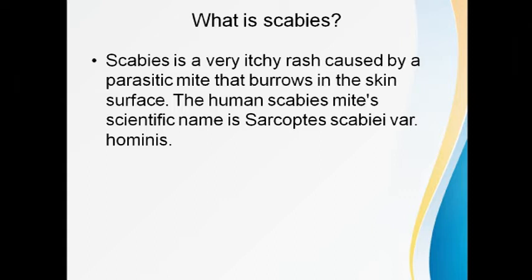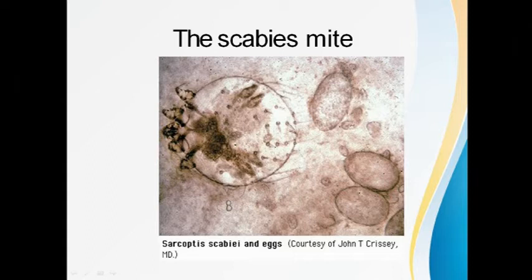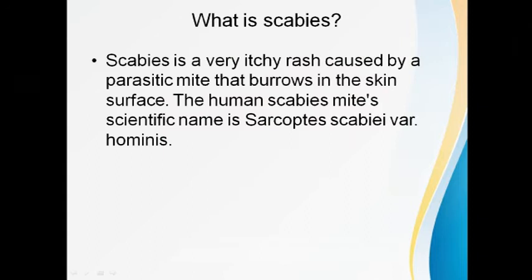The itch mite burrows through the skin. The scientific name for the scabies mite in humans is Sarcoptes scabiei var. hominis. Other variants of scabies also exist — animal scabies is a common condition caused by animal species like dog, cat, or cattle. In humans, the hominis variant is an obligate ectoparasite.